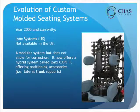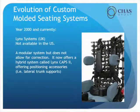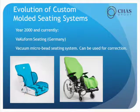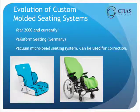Here's the link system they use in the UK — they've advanced their product to now offer lateral supports, hip guides, and different types of accessories. The only thing about the links is they're not currently available in the United States. Vacuum form seating is a company in Germany that uses beads rather than foam — it's a vacuum packed bead type of system, and they do quite a bit of correction with their molds.